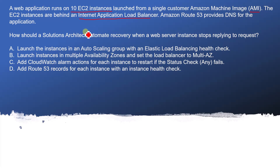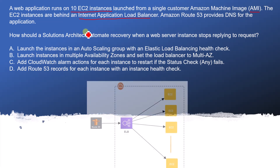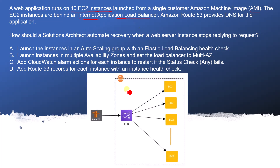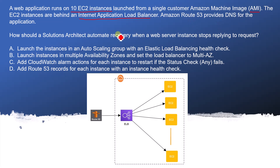Let's try to visualize the question. There is a Route 53, there is an ELB, and these are the 10 EC2 instances. The ELB is doing the load balancing task and Route 53 is providing the DNS information.